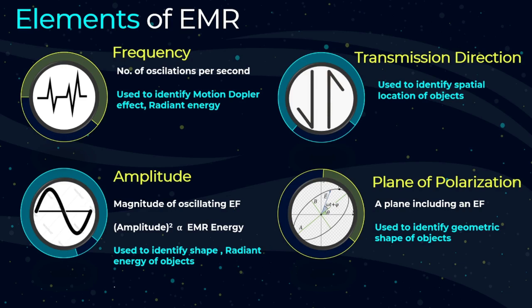Let's have a look at the elements of electromagnetic radiation. There are four elements: frequency, transmission direction, amplitude, and plane of polarization. The amplitude is the magnitude of the oscillating electric field. The square of amplitude is proportional to the energy transmitted by electromagnetic radiation. The energy radiated from an object is called radiant energy. A plane including the electric field is called the plane of polarization. When the plane of polarization forms a uniform plane, it is called linear polarization.